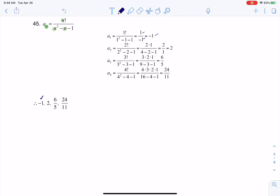Now a sub 2, we get 2 factorial over 2 squared minus 2 minus 1, and again, 2 factorial, that would be 2 times 1. That's how we find that number, and then the denominator just simplifies to 1, so a sub 2 is 2.